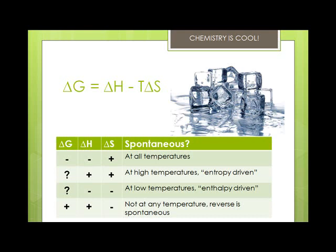To summarize spontaneity: a negative Gibbs free energy with a negative enthalpy and a positive entropy means the reaction is spontaneous at any temperature. A positive enthalpy and a positive entropy means at high temperatures it will be spontaneous and is entropy driven. A negative enthalpy and a negative entropy means it will proceed at low temperatures because it is enthalpy driven. A positive Gibbs free energy with a positive enthalpy and a negative entropy means it will not proceed at any temperature because the reverse is spontaneous.